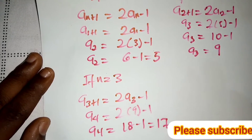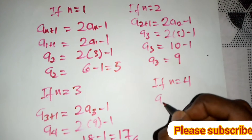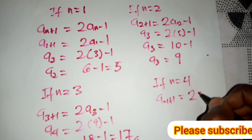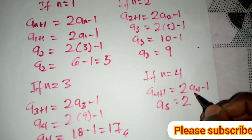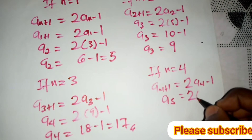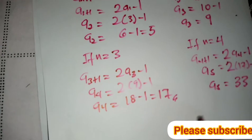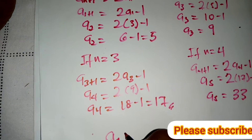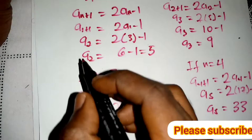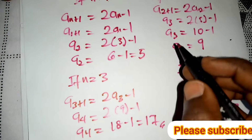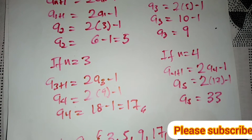So a4 = 18 - 1 = 17. Then if n = 4, a4+1 = 2*a4 - 1, so a5 = 2(17) - 1 = 34 - 1 = 33. The first five terms of the sequence are: 3, 5, 9, 17, 33.